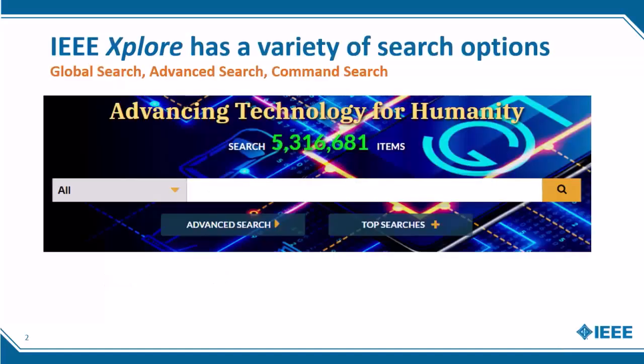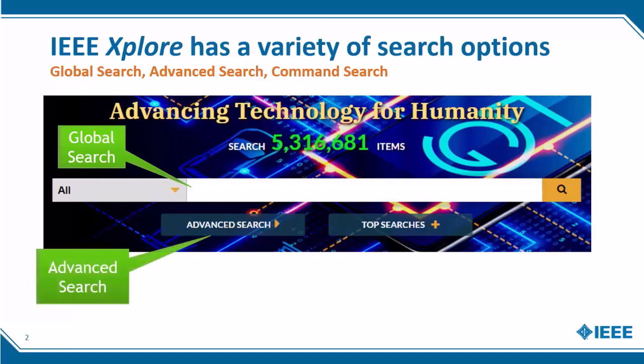Within IEEE Xplore, there are a variety of search options, starting with a global search bar on the homepage, which supports both simple basic searches and command language searching. There is also an advanced search, which is more of a guided way to search. You can access it by clicking on the advanced search link just below the global search bar. You can also get to the command search from the advanced search page.